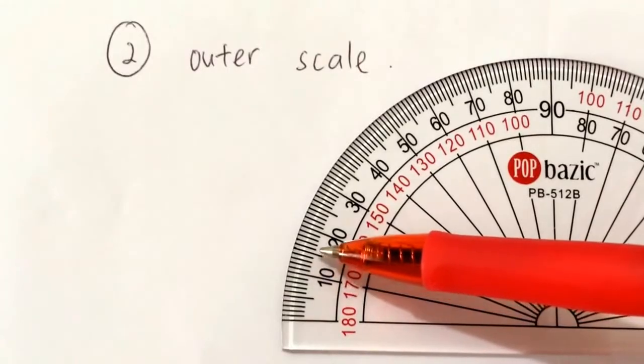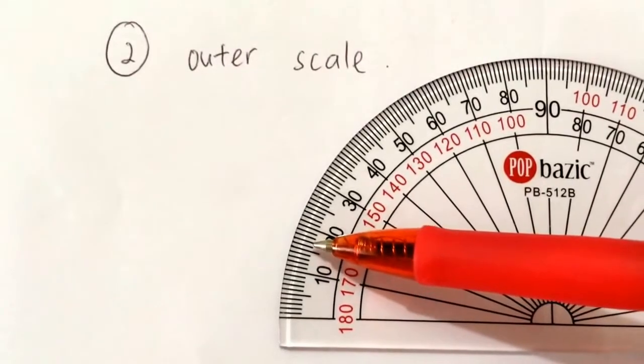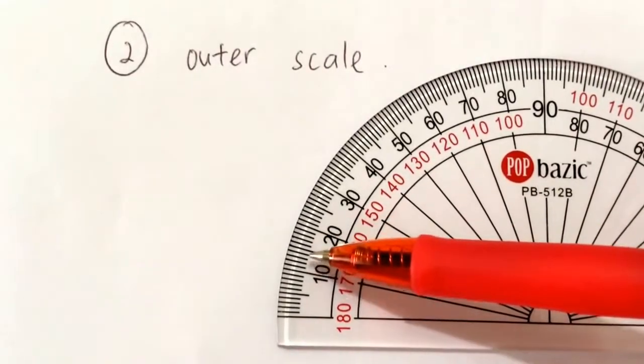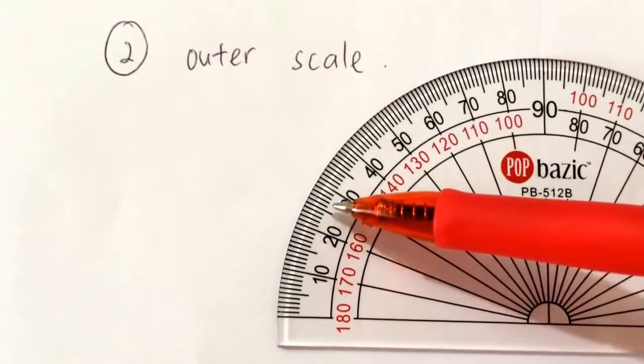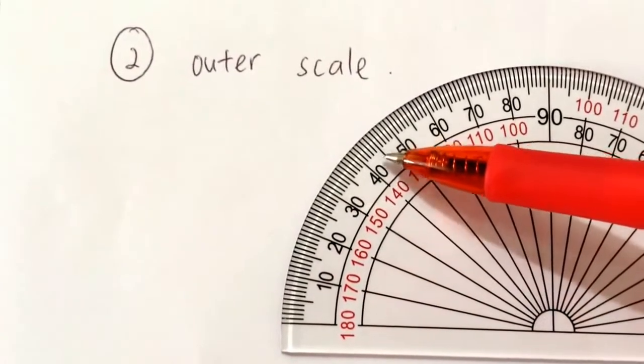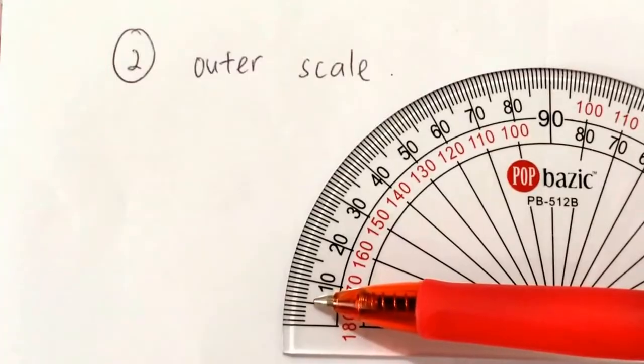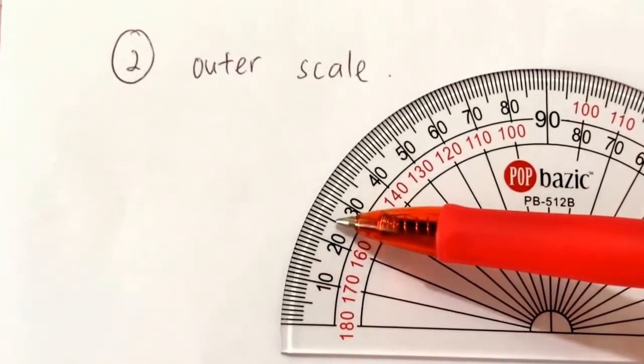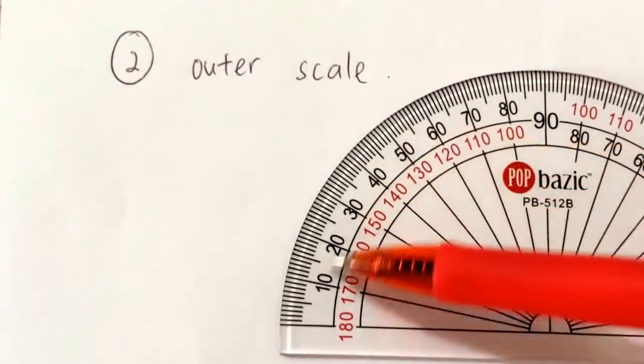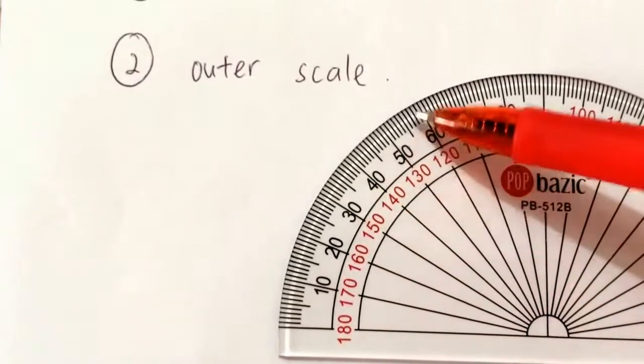11, 12, 13, 14, 15, 16, 17, 18, 19, 20. You'll notice that for multiples of 5, the lines are longer. So the outer scale is easy to read - you just look at the number and count the lines.